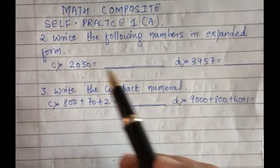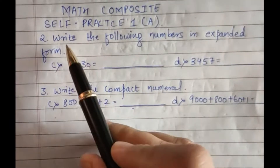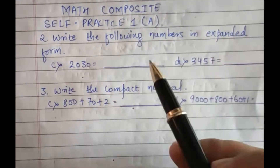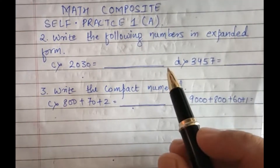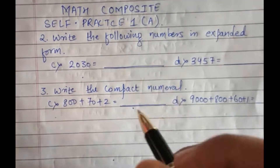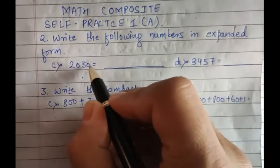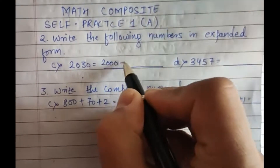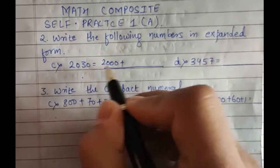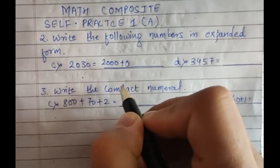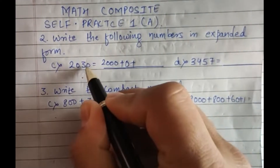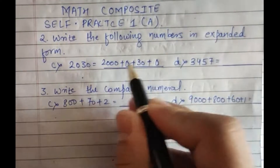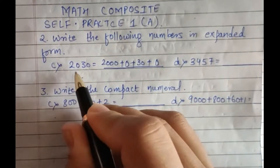Question 2 was to write the following numbers in expanded form — you have to expand the compact form into expanded form. For example, 2030: two thousand, plus zero hundreds, plus three tens, plus zero ones. This is the expanded form of 2030.